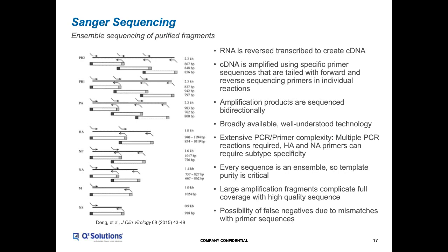Also importantly, with Sanger technology, every sequence you see is actually an ensemble of sequences. You have many, many molecules corresponding to each amplification product, and the readout on the sequencer is an amalgamation of all those individual sequences. So if the isolate is not pure — if you have more than one strain in that isolate — you may not be able to detect that because of that ensemble sequence. There's also the possibility of false negatives, because if the primers don't land correctly on your sequences, they will fail to amplify.